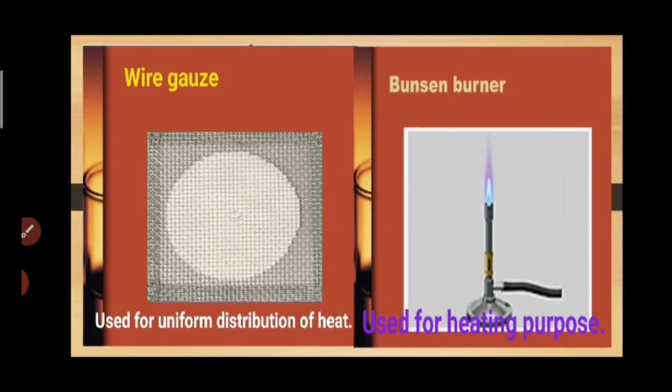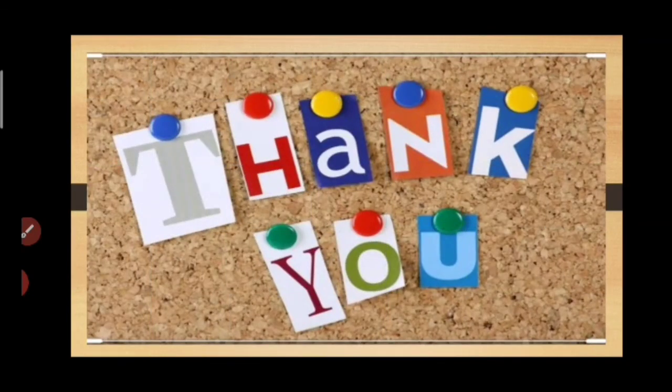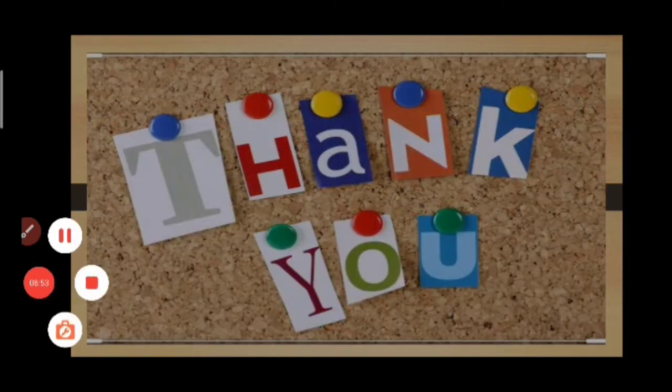The wire gauge is a wire mesh with asbestos placed in between, used for uniform distribution of heat so that the bottom of a container is heated evenly all over. The Bunsen burner is used for heating purposes. These are a few common lab apparatus and their uses. I hope you understood the chapter well. Thank you.